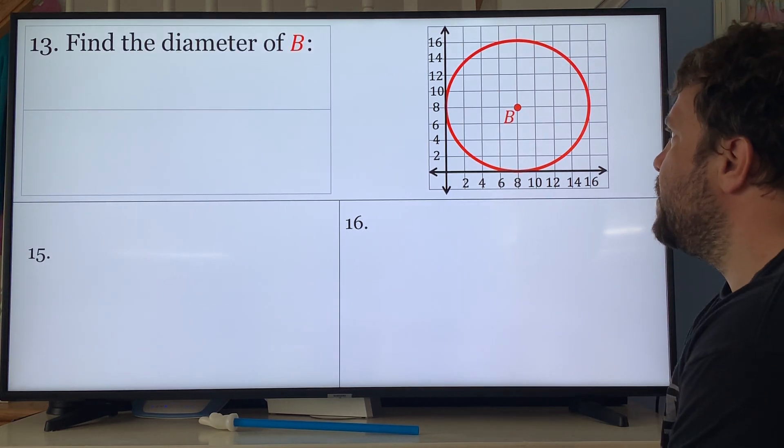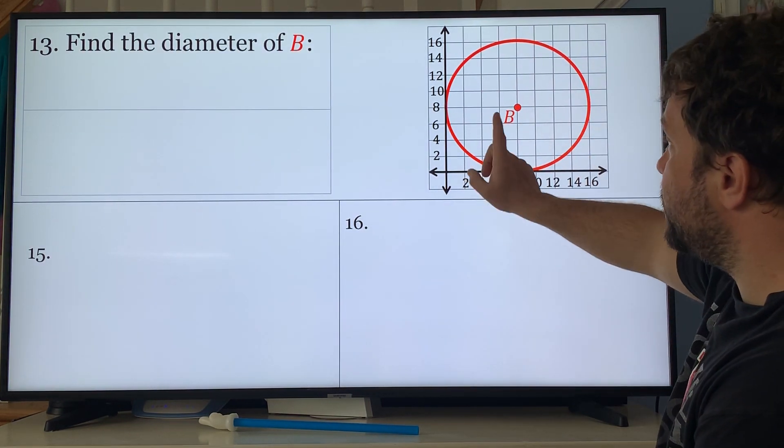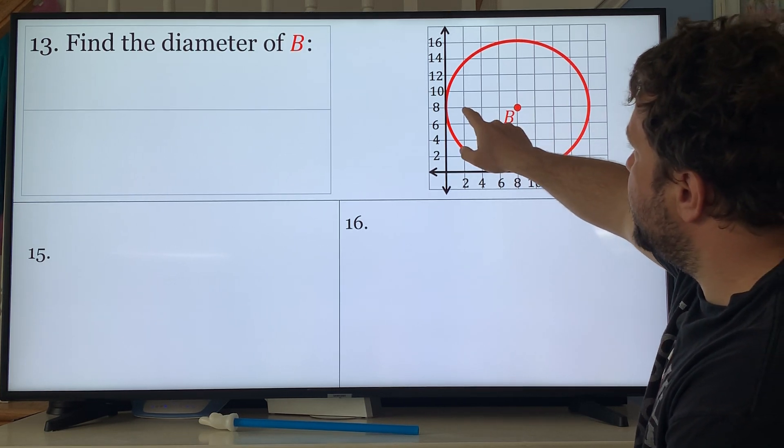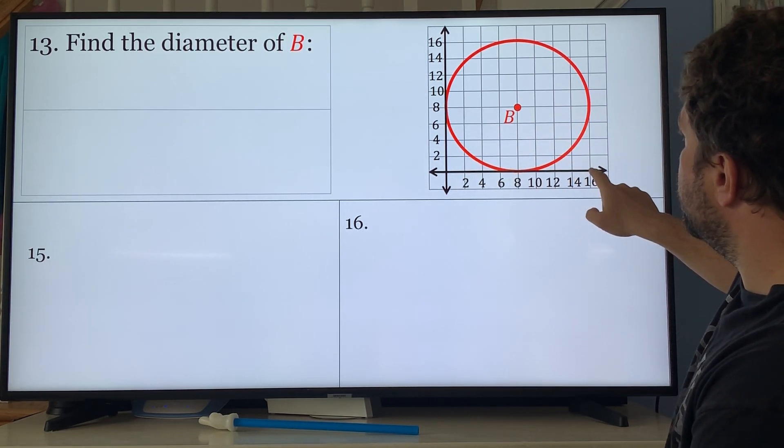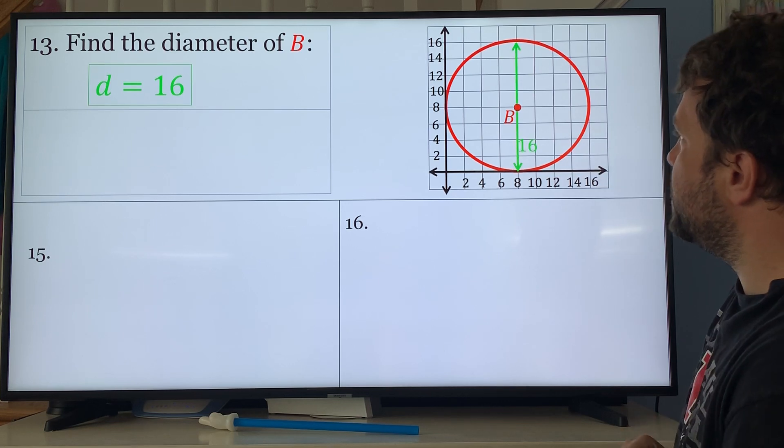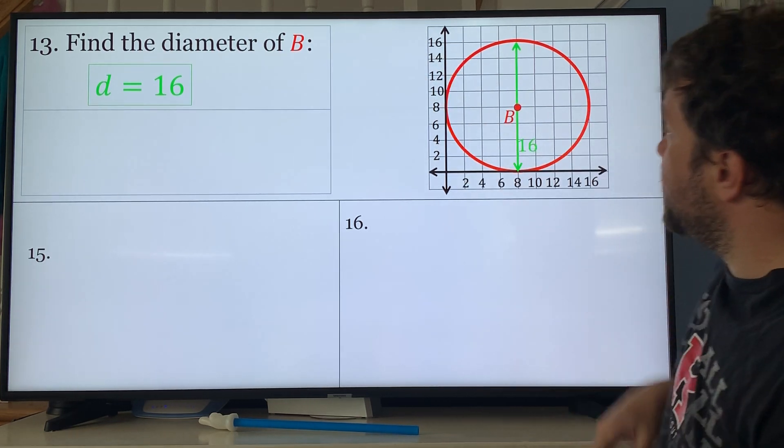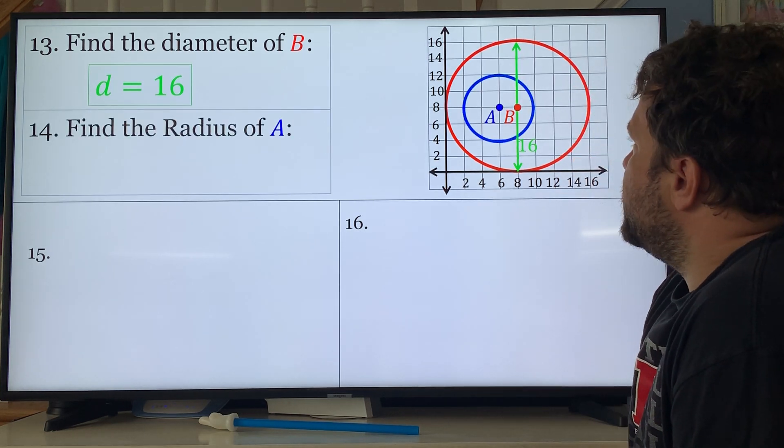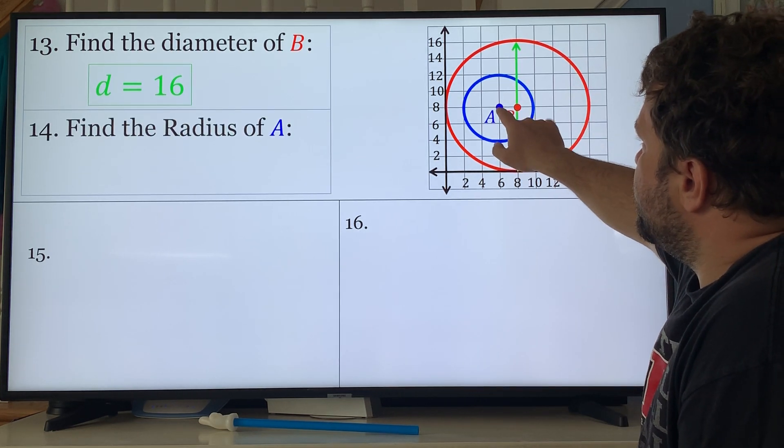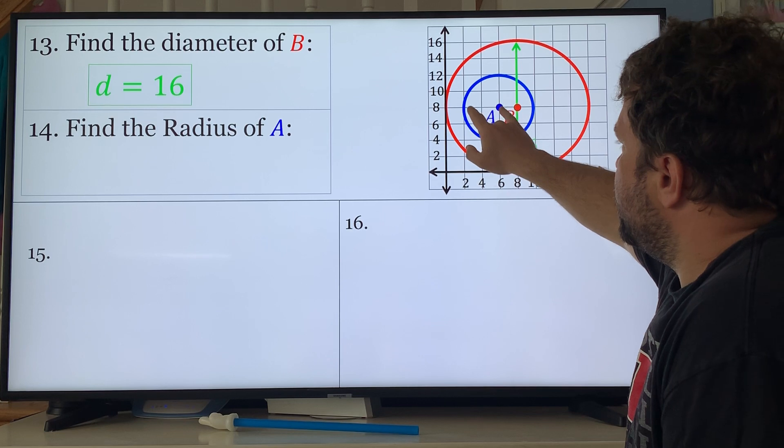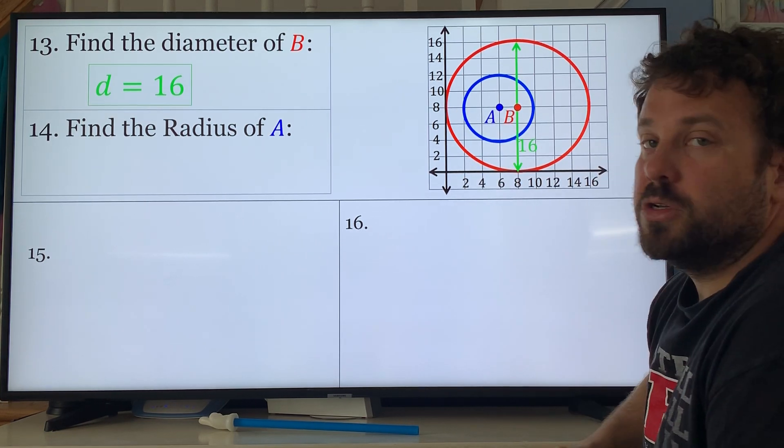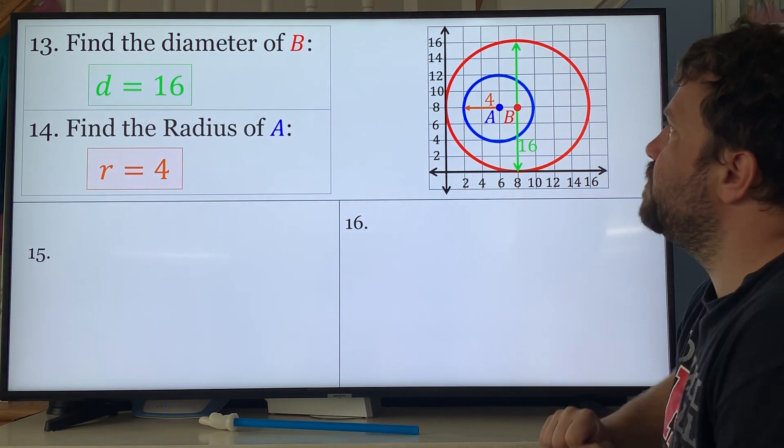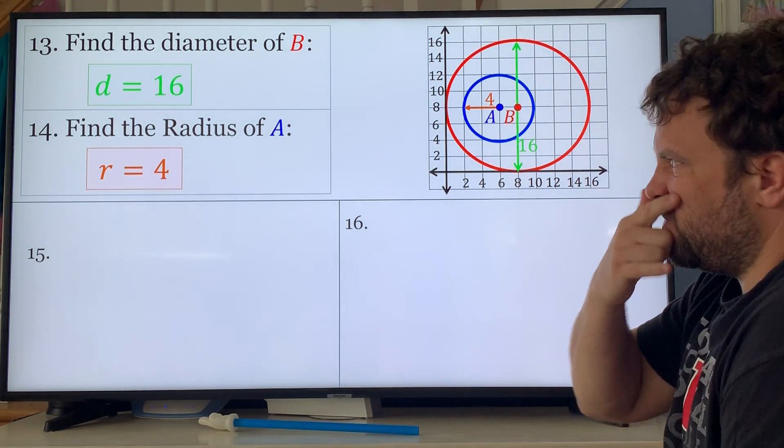Problem 13: find the diameter of b. What you should have done was notice first 2, 4, 6, 8, they go up by twos. So the diameter is from 0 to 16, you could just measure it that way, or count it. So your diameter is 16. Find the radius of a. Each one goes up by 2, so it is 4. You can also do 6 minus 2 equals 4.